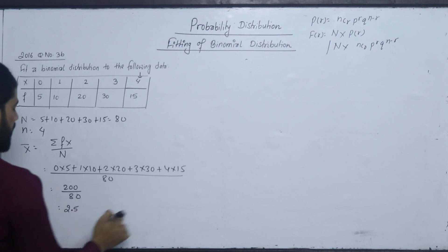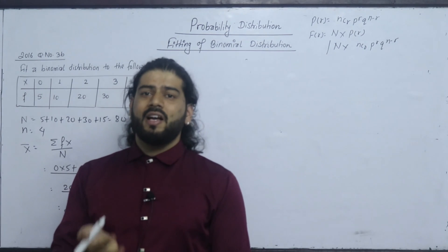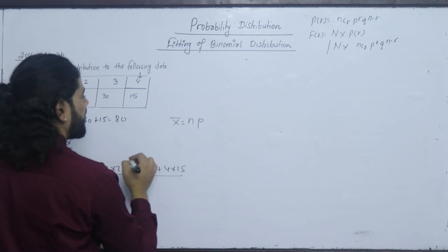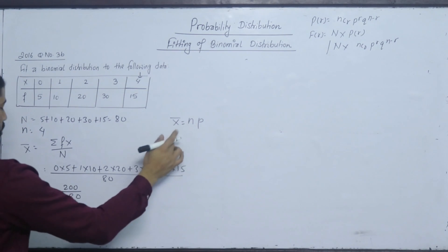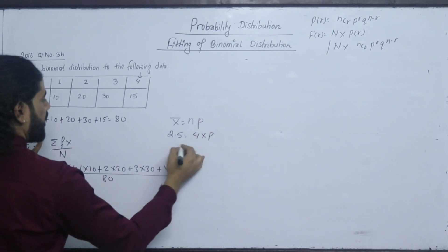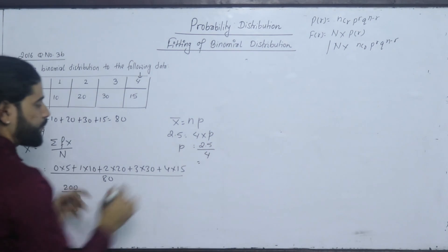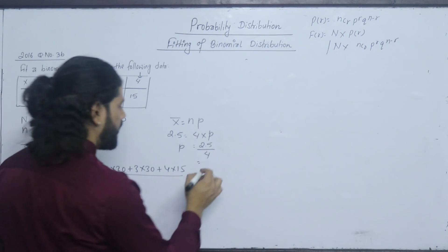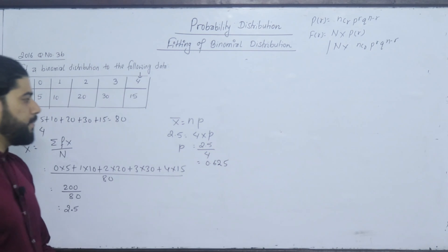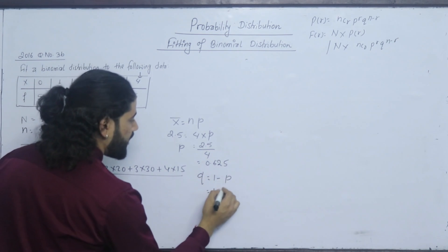The mean is 2.5. In binomial distribution, the mean equals n times P, so P equals mean divided by n equals 2.5 divided by 4, which gives P equals 0.625. Therefore Q equals 1 minus P equals 1 minus 0.625 equals 0.375.